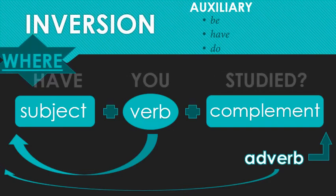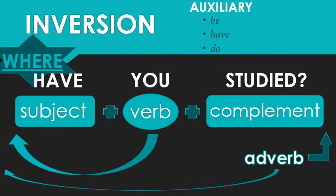But back to regular inversion — let's practice a little bit more with a couple more examples. 'Where have you studied?' So 'you have studied where' becomes 'where have you studied?' The verb goes in front of the subject, and the adverb goes in front of the verb. That word order is adverb, verb, subject, complement: 'where have you studied?'